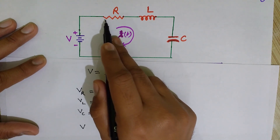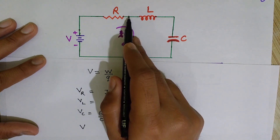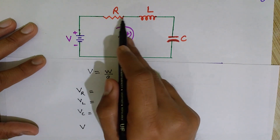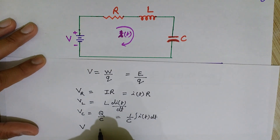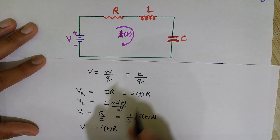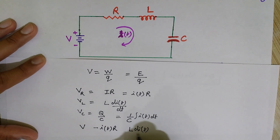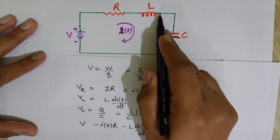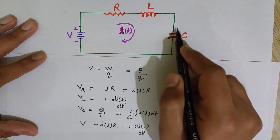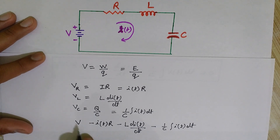Since current moves from higher potential to lower potential, as we move across the resistor in the direction of current flow, the final minus initial difference is negative. So the voltage across the resistor is negative I times R. By the same principle, the voltage across the inductor is negative L dI/dt, and the voltage across the capacitor is negative (1/C) times the integral of I(t) dt.